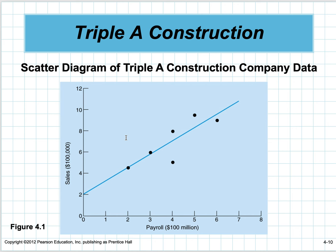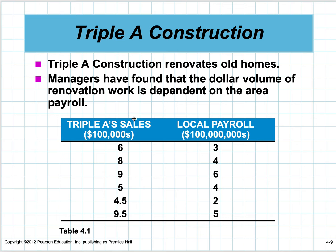They take these two variables. What are we interested in predicting? We're interested in predicting Triple A's sales—that makes it the variable we'd like to predict. We can't control the local payroll; that's really a macroeconomic or microeconomic factor. So that's the independent variable we have no control over, but it influences the variable we're trying to predict.